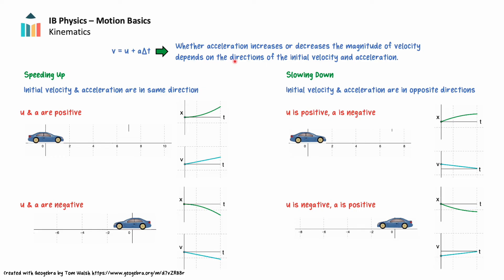To understand this, we must consider the direction of the initial velocity and the direction of the acceleration. We'll look at four scenarios involving acceleration. First, an object moving in a positive direction while accelerating in a positive direction: both velocity and acceleration are positive, and the object speeds up. We can see this on a position-time graph where the gradient gets steeper over time. We can also consider the object's instantaneous velocity — the velocity at a single moment in time — represented as the tangent line to the position-time graph at that moment. Plotting instantaneous velocity against time produces a linear graph with a positive gradient above the time axis.